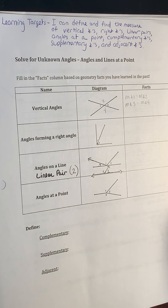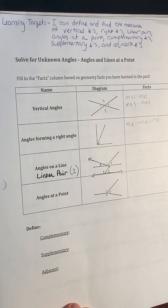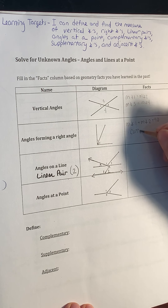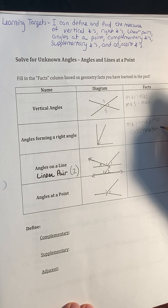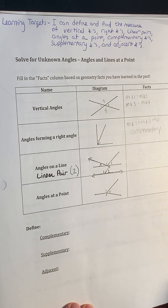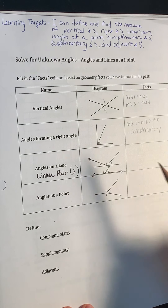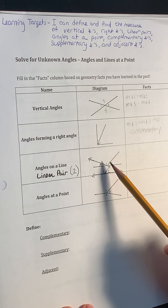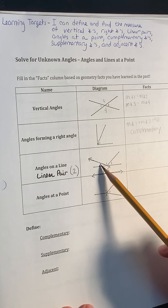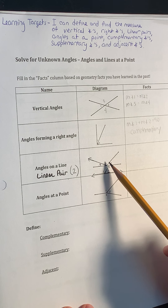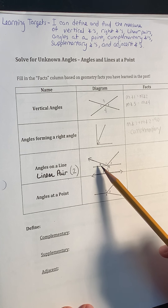If you recall, two angles whose sum is 90 are called complementary angles. Our next type is angles on a line, or a linear pair.